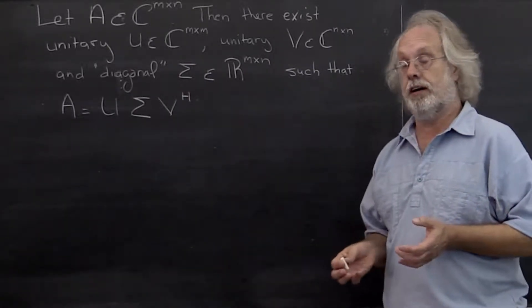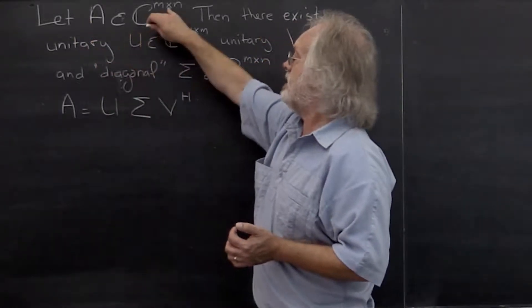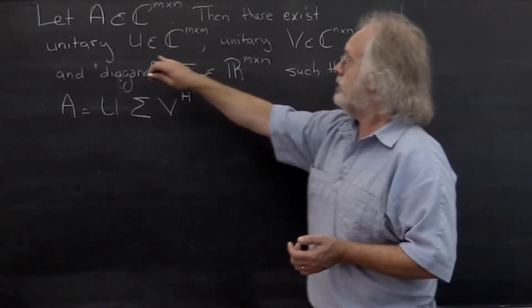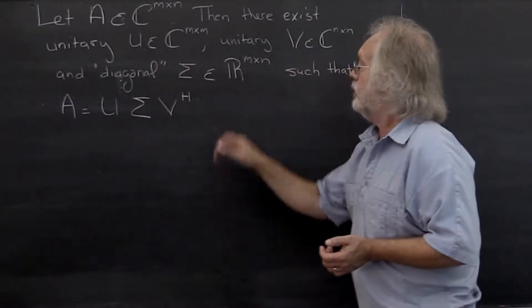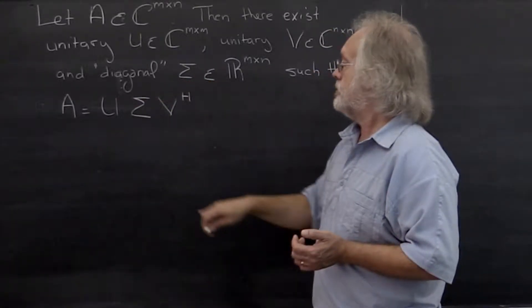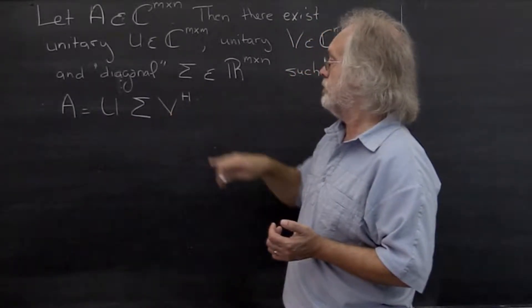And what is the singular value decomposition? Given any matrix A that's m by n, you can find the unitary matrix U, a unitary matrix V, and a diagonal matrix sigma such that A is equal to U times sigma times V Hermitian transpose.